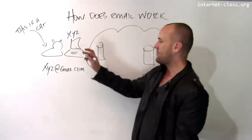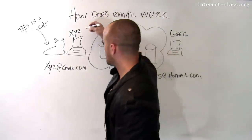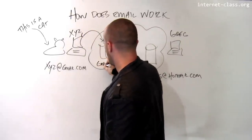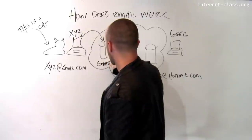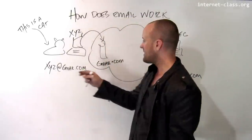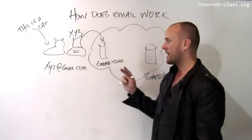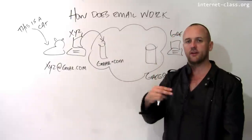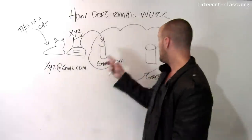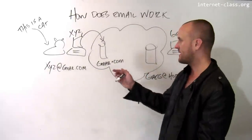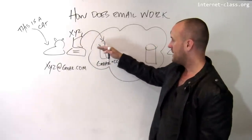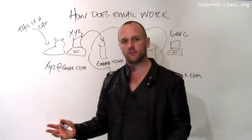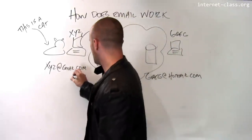The first thing that happens when Ziz sends an email is that there is an interaction between her computer and the gmail.com mail server, which is located somewhere on the internet. Ziz's computer has to tell Gmail that it wants to initiate a mail transfer — a mail message to greg at hotmail.com. What's interesting to note is that this is not transmitting the mail itself; this is just telling the mail server that the mail needs to be transmitted.